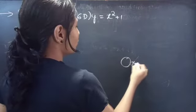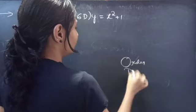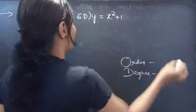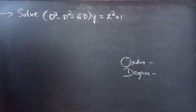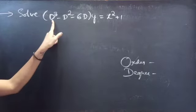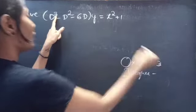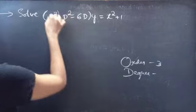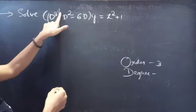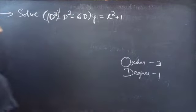Firstly, let's find the order and degree of the given differential equation. Identify the highest derivative here — D³ is the highest derivative. So the order will be 3, and the highest power of the highest derivative is the degree. Degree is 1.